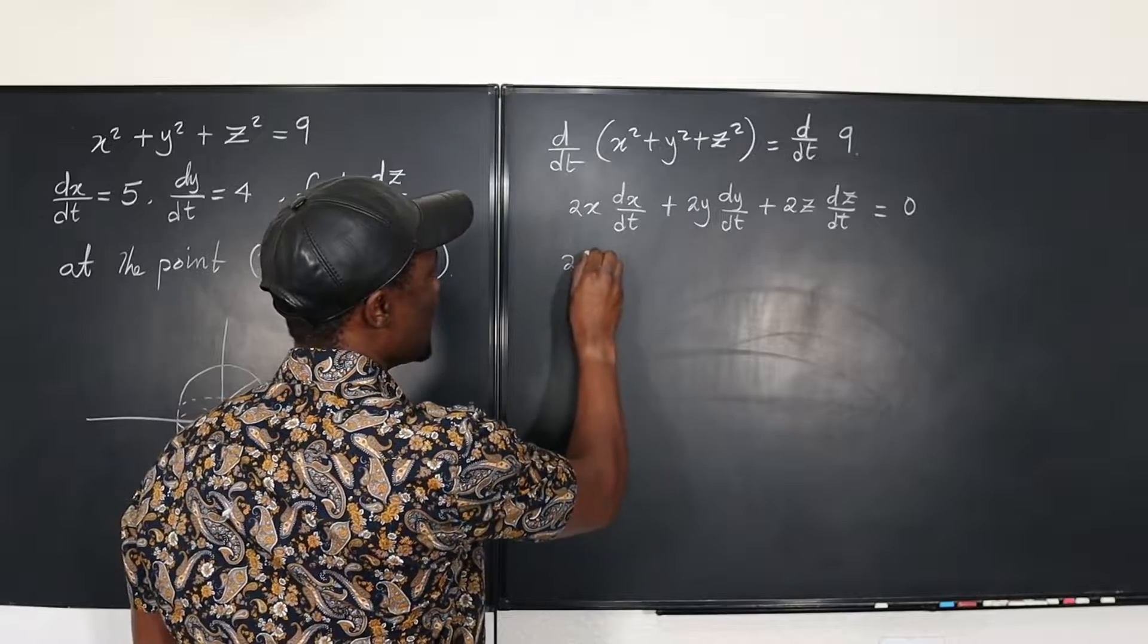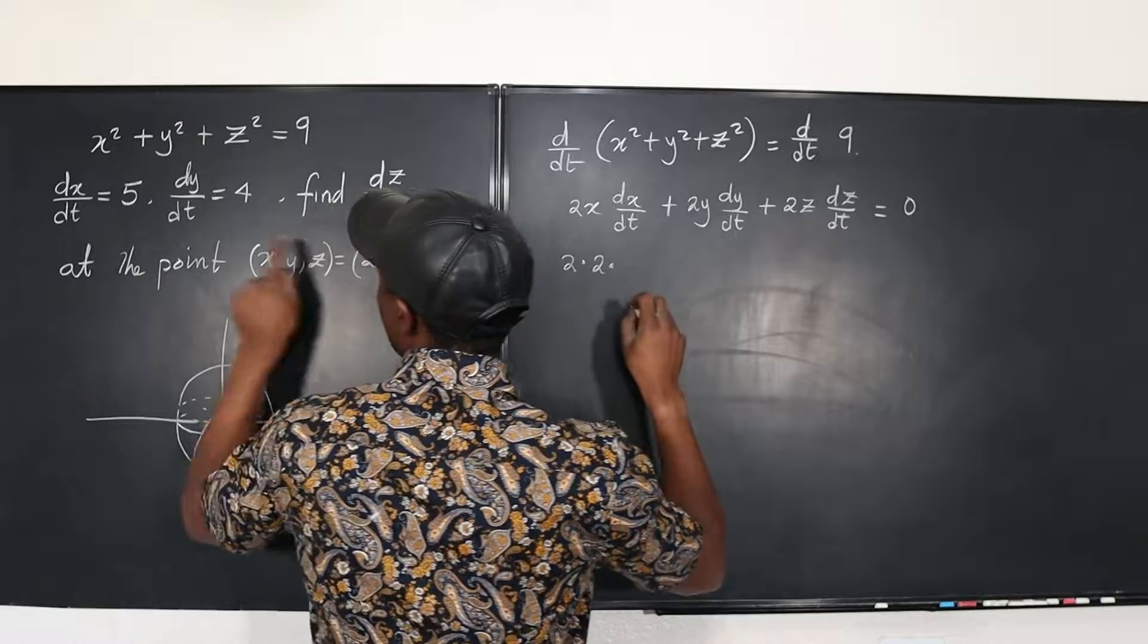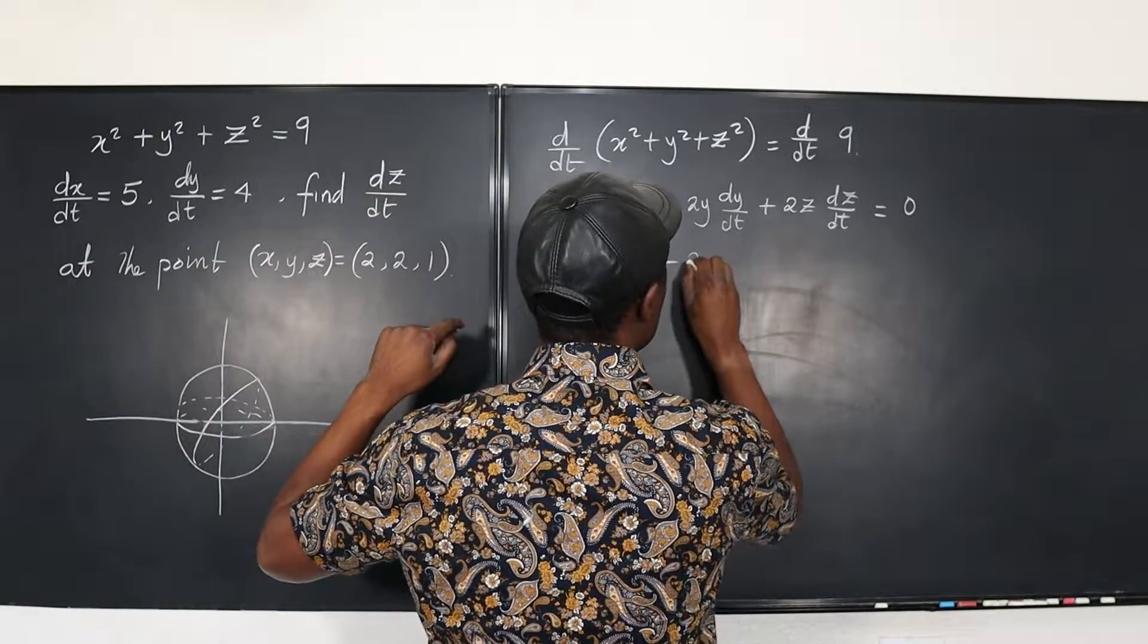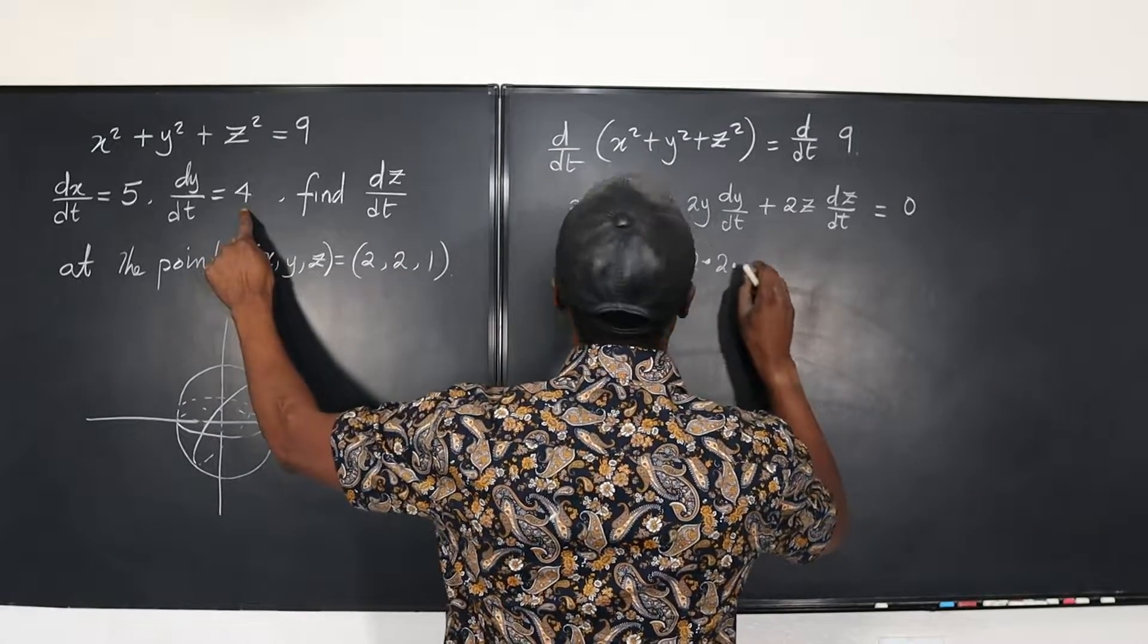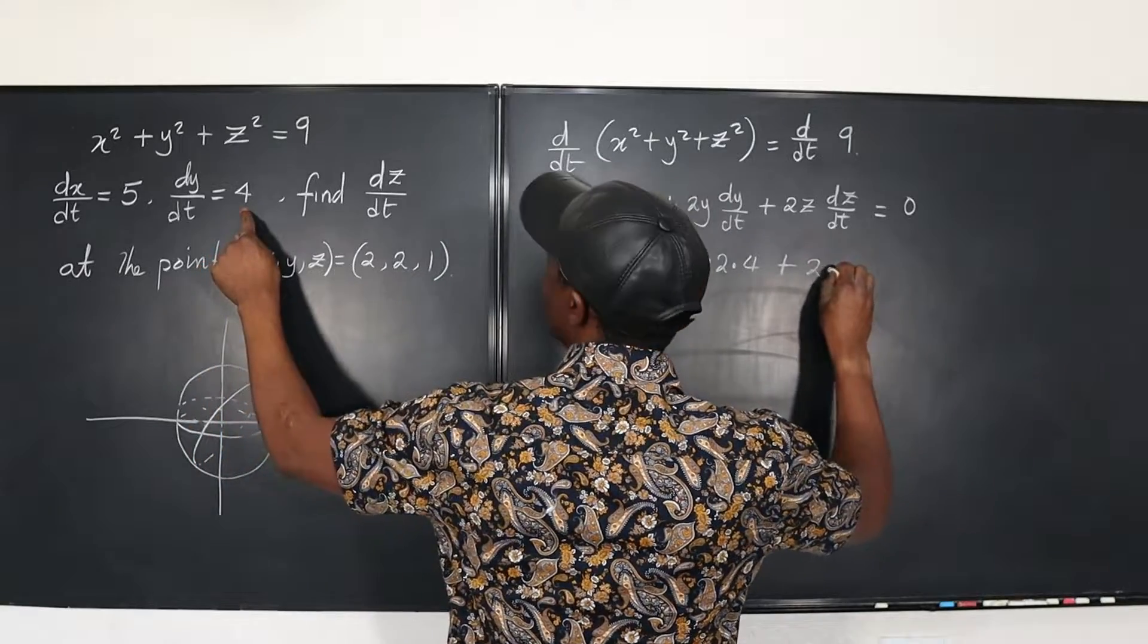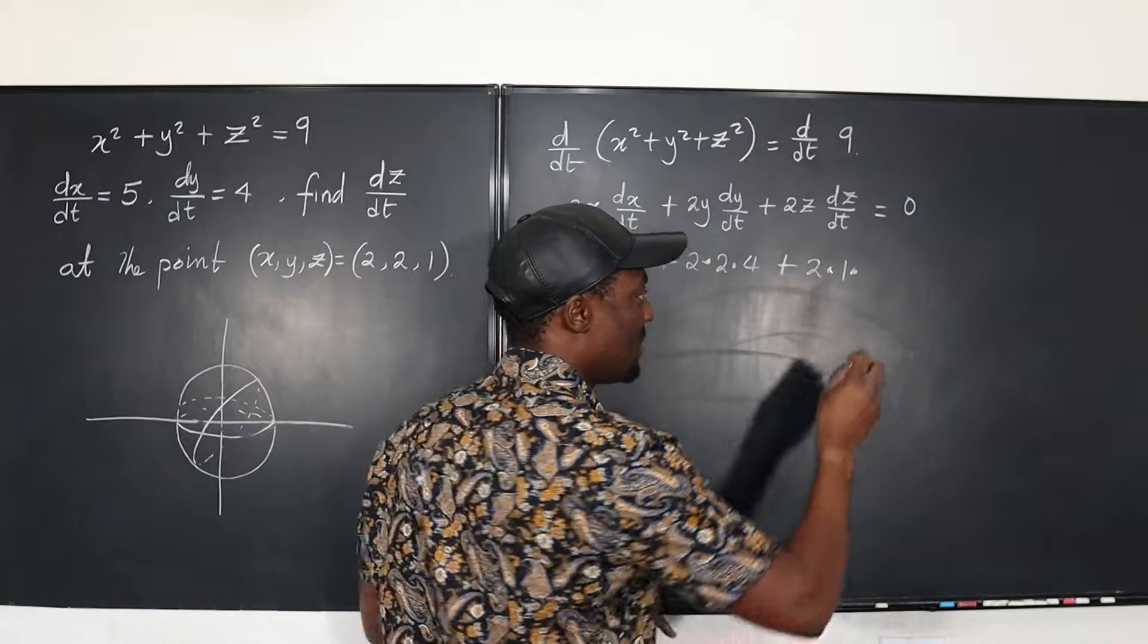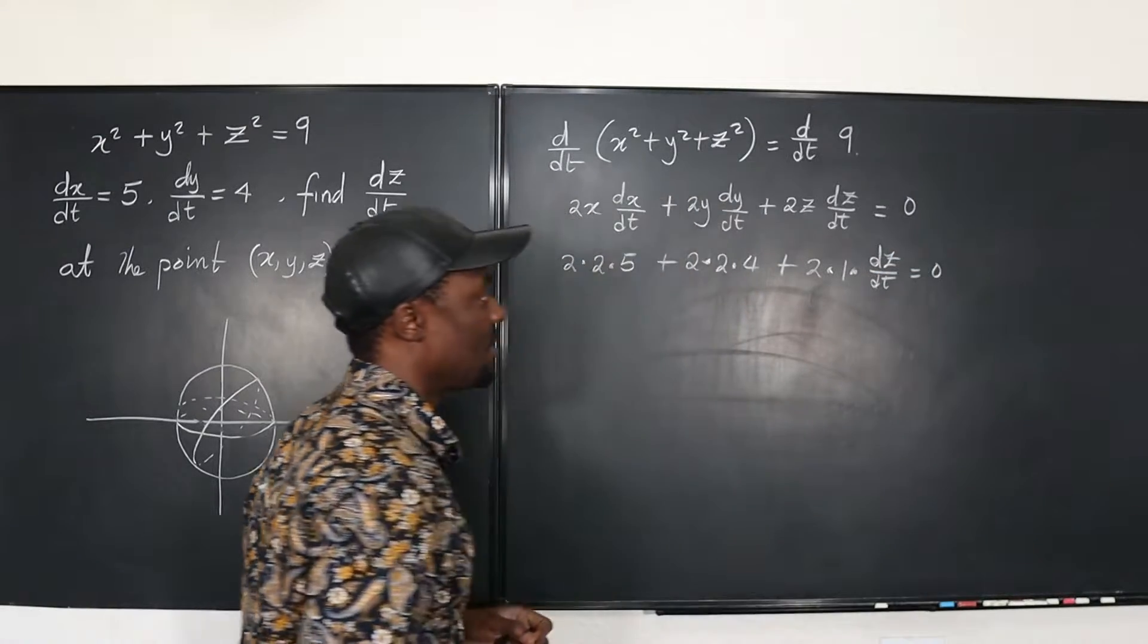So this is going to be 2 times, what is x? X is 2. And what is dx/dt? It's given as 5. We go here. We have 2 times, what is y? Y is 2. What is dy/dt? It's given as 4. We're done. We go here. We have 2, what is z? Z is 1. And what is dz/dt? That's what we're looking for. We're looking for dz/dt. We don't have it. But everything must add up to zero.